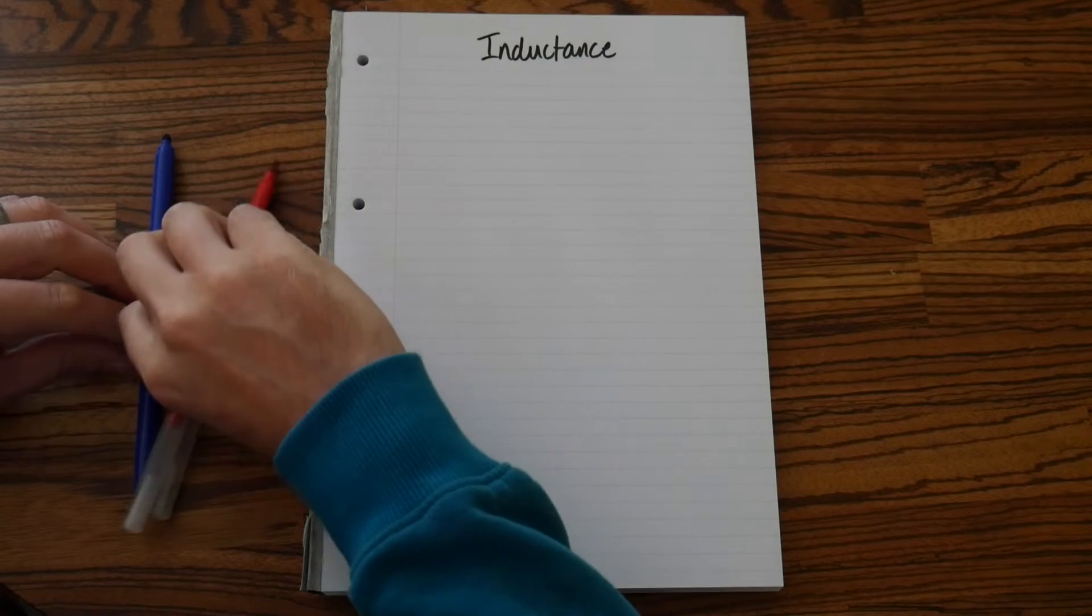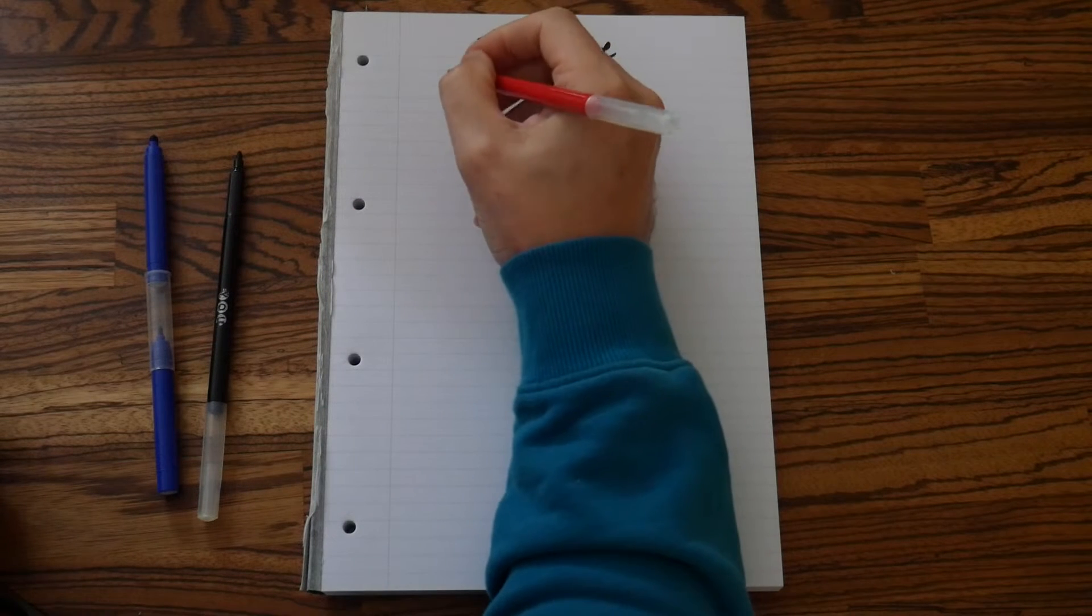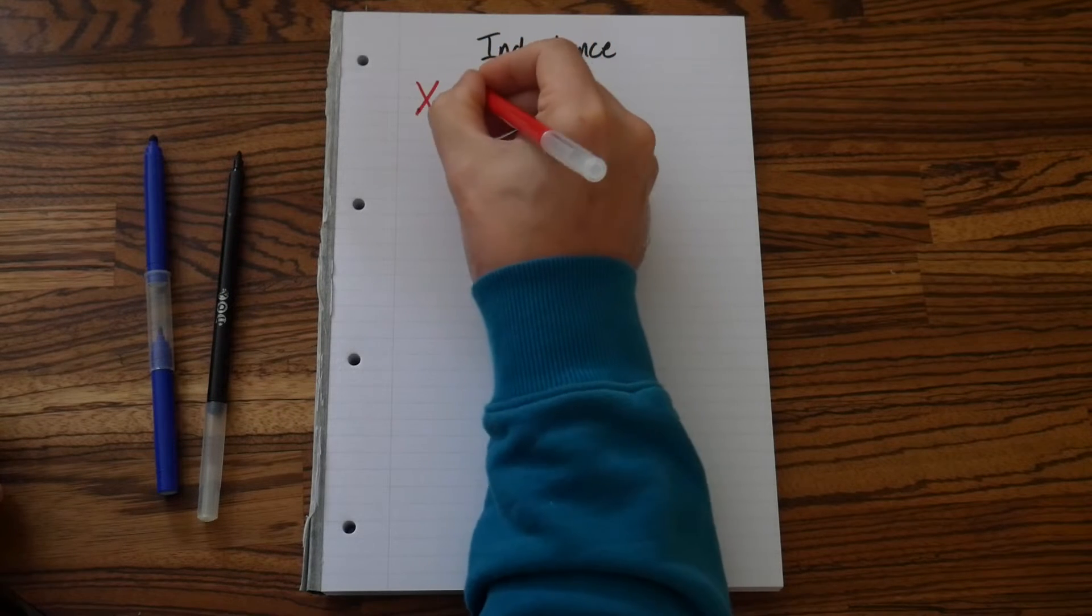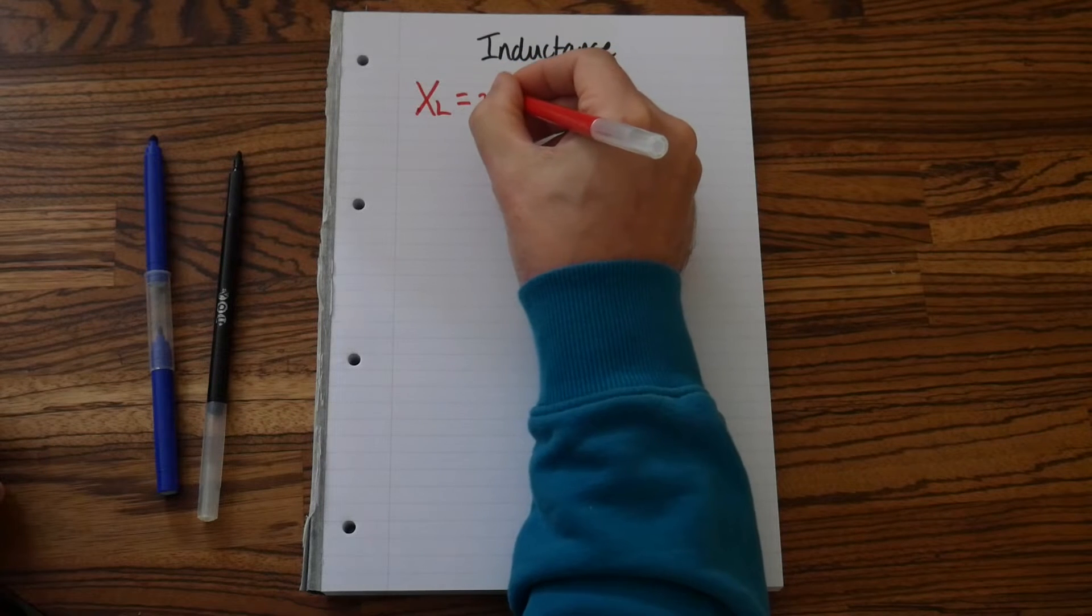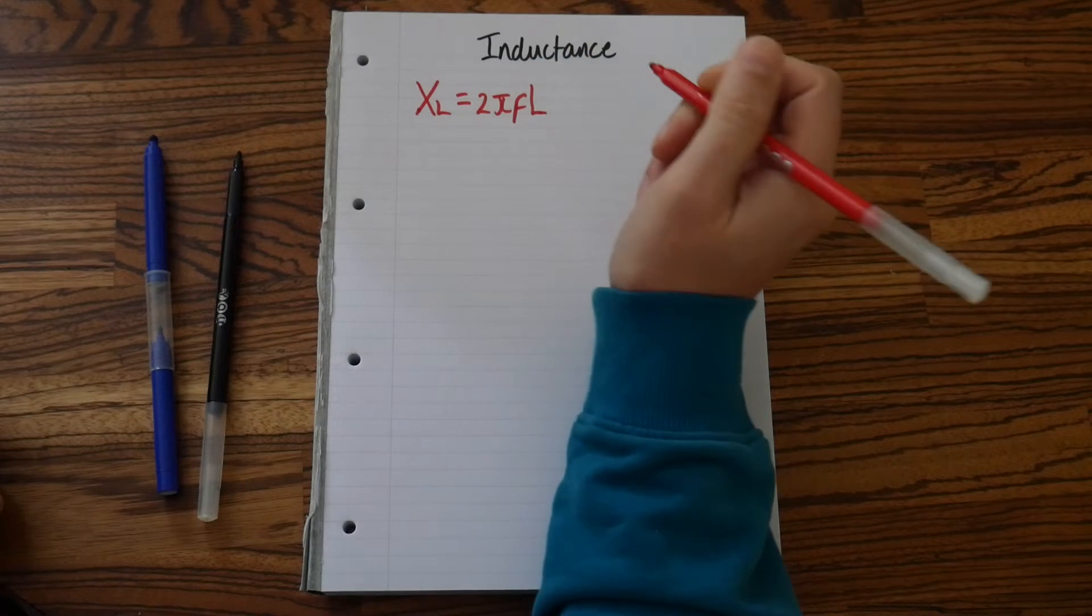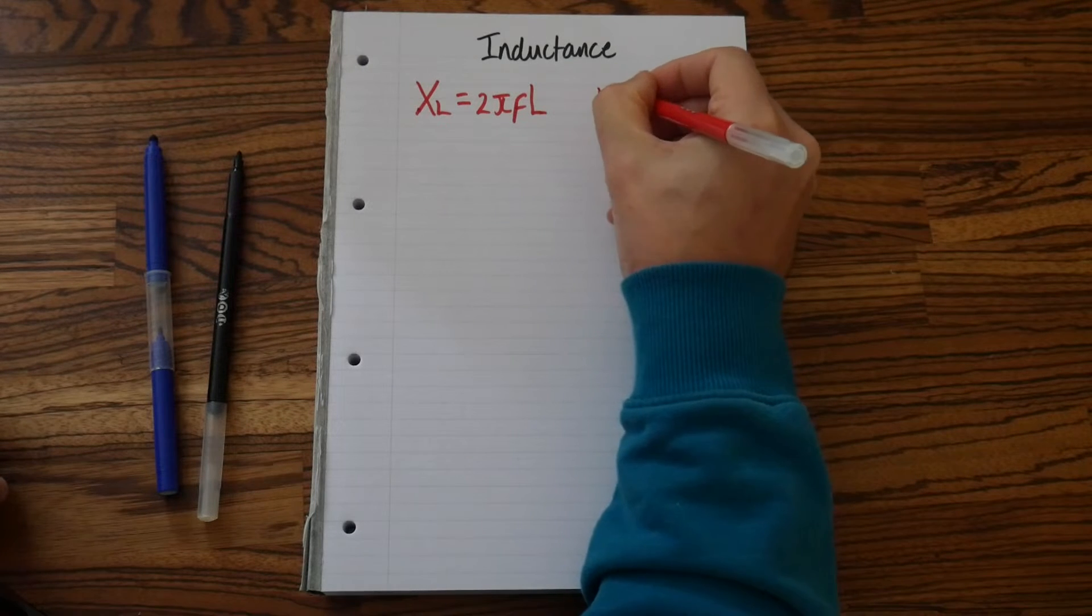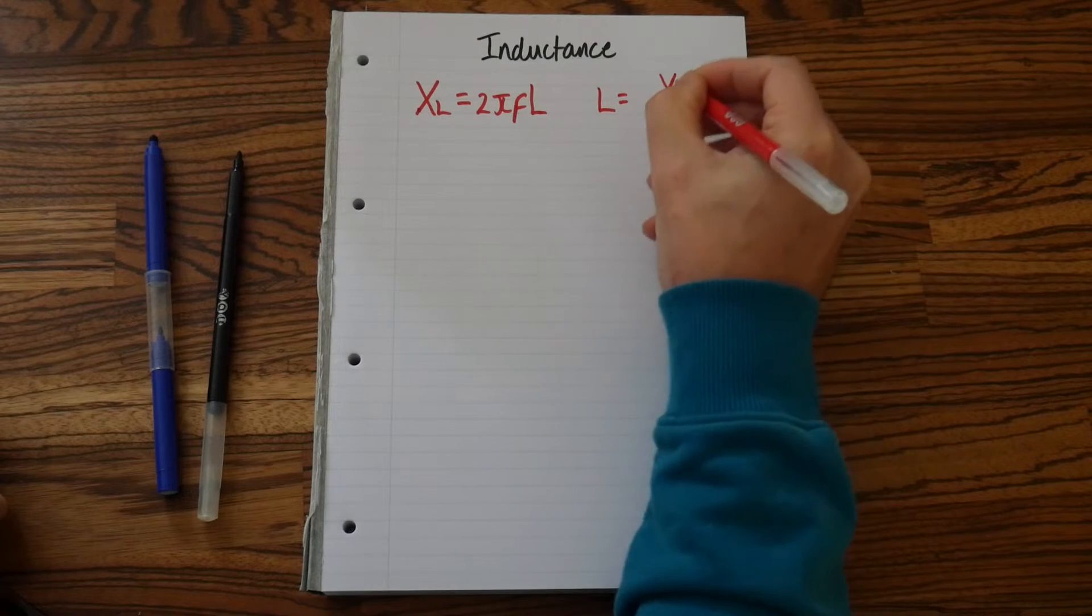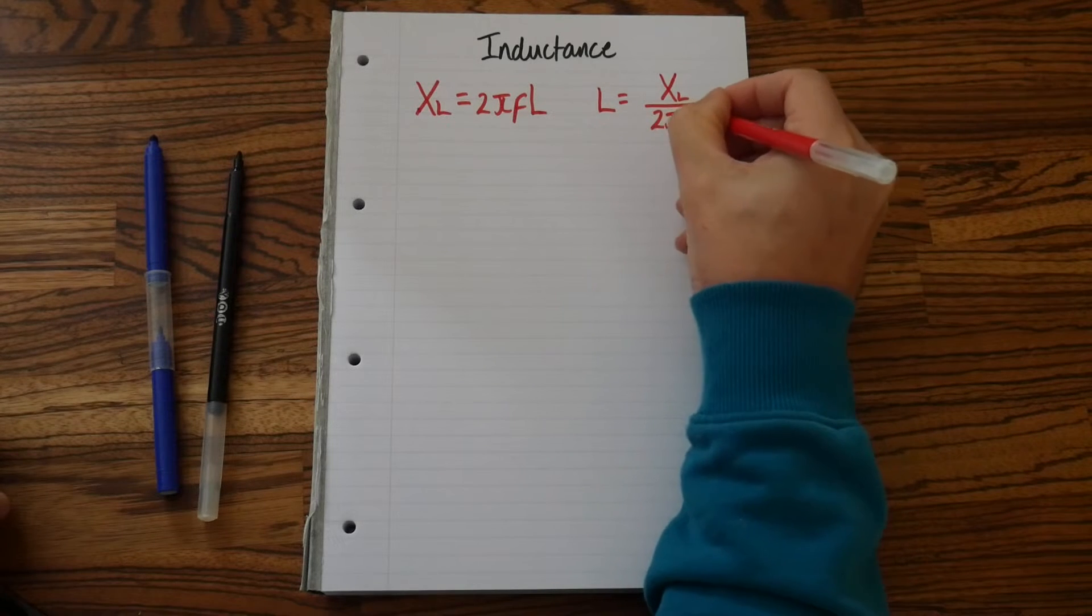Now there are a few things to write here. We've got the formula and a few other bits of information that you will need for your notes. First of all we'll start with the formula. And that is XL equals 2πfL. And then we can transpose that to give us capital L equals XL over 2πf.